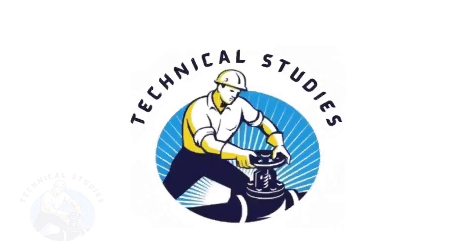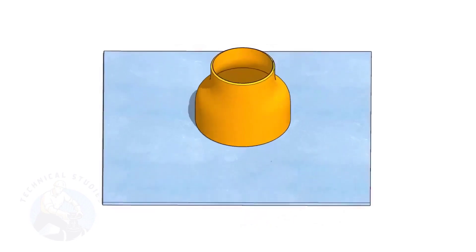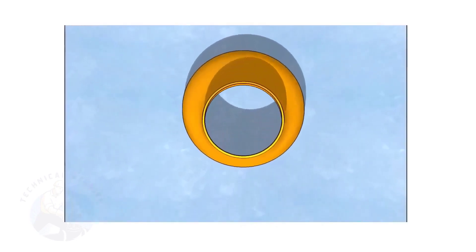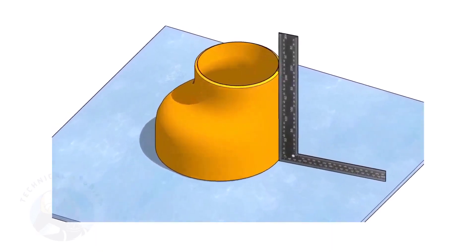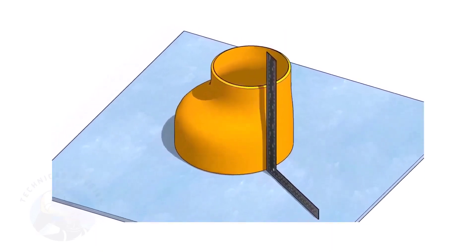Welcome to Technical Studies. Fitting an eccentric reducer to a pipe that is already fitted to another fitting like a flange, tee, elbow, etc. is a little tricky.